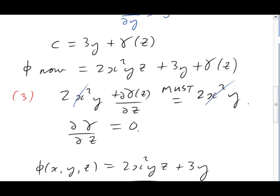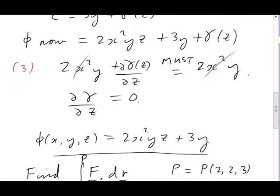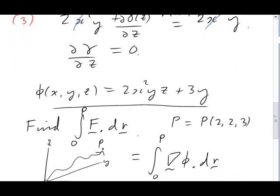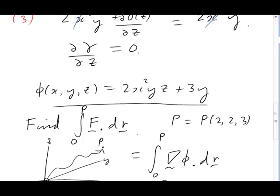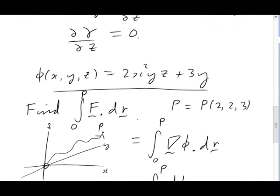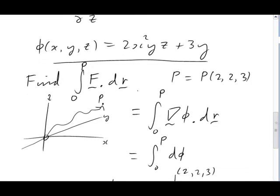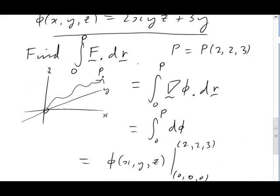I'm now going to do an integral of f dot dr along a path from the origin to a point p. I'll take p to be (2, 2, 3). Here's a picture. I've substituted f equals grad phi. So we've got the integral from 0 to p of grad phi dot dr. And remember how that works from part 1 of this presentation. It's just the integral from 0 to p of d phi. But the integral of d phi is phi.